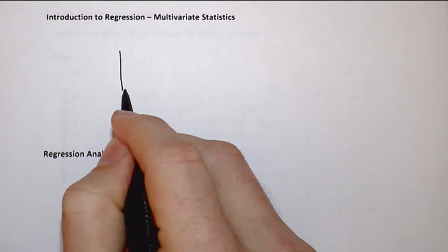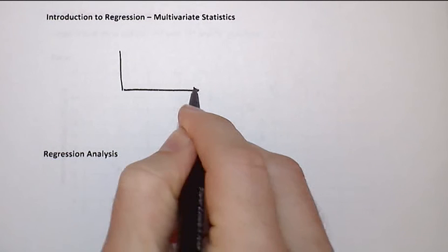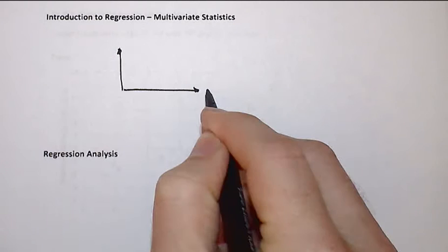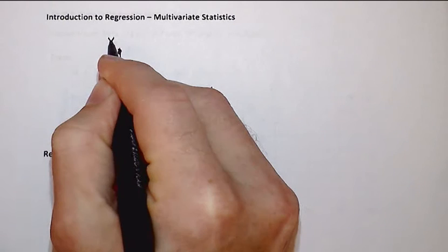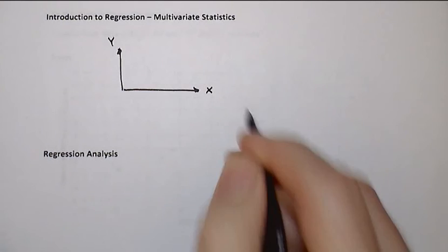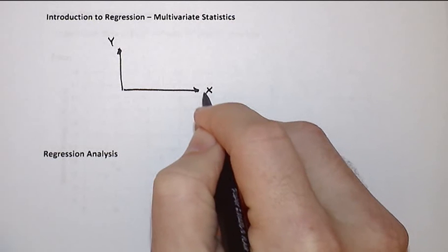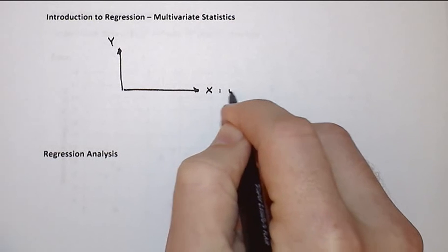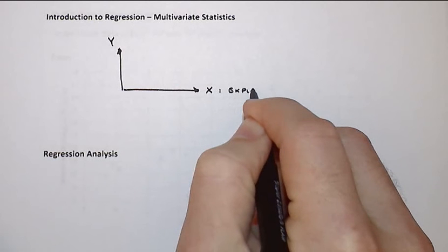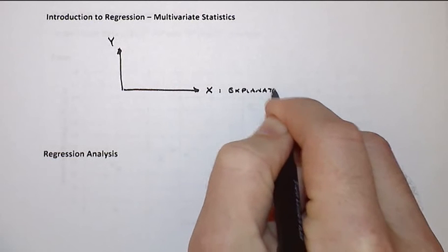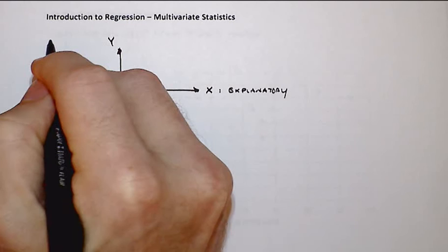And we'll start with two different joint random variables where we're going to select the one that's on the x-axis to be the one that we think might be an explanatory variable for our response quantity.